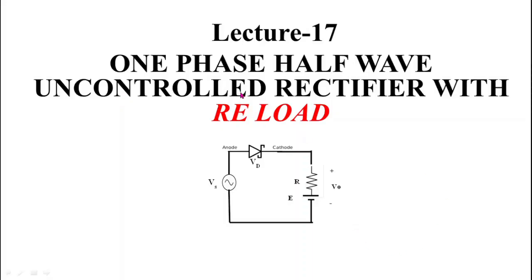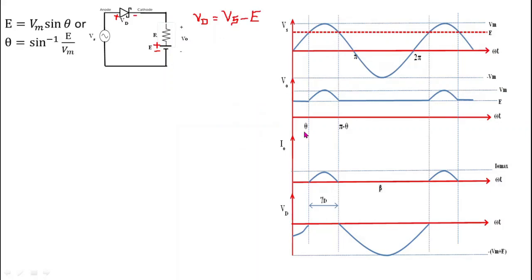Welcome to lecture number 17. Today we are going to study a single-phase half wave uncontrolled rectifier with RE load. In this circuit, the load consists of a resistance R and a DC EMF E connected in series. We get output voltage V0 across this RE load, which is connected in series with a diode. The whole circuit is supplied with supply voltage VS equals VM sin(ωt).